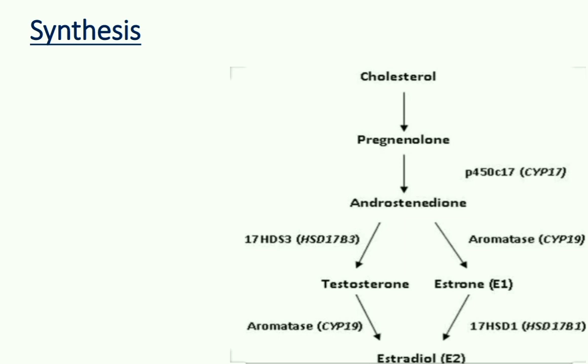The most potent form is estradiol, with a plasma level during the follicular phase of around 30 to 200 picograms per ml. In plasma, estrogen is transported mainly by albumin and a small quantity by globulin. It is degraded in the liver and excreted mainly in urine, with a small quantity also in bile.